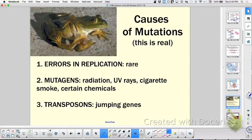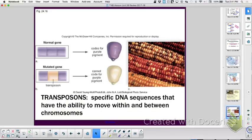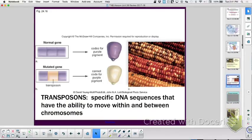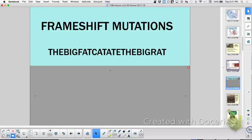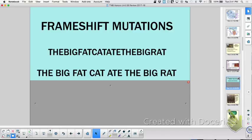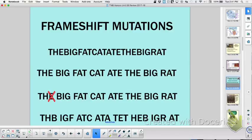So then we said, what can cause mutations? You could have errors in replication, but that's pretty rare because there's a lot of enzymes double-checking that. But mutagens can cause mutations - radiation, UV rays, cigarette smoke, certain chemicals. All of these things are things in the environment. Or we can inherit a mutation as well through a family. We talked about transposons, jumping genes, when genes jump around to new locations. We talked about the frameshift mutation, and I changed the codon into three-letter words that you could understand. The big fat cat ate the big rat, and if you deleted that, then it shifts all of the codons so every word now is misspelled, and that's why frameshift mutations cause the most damage.